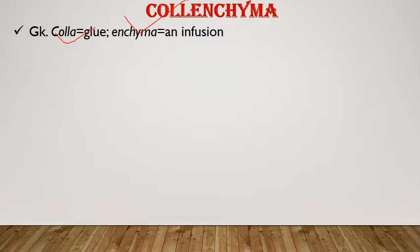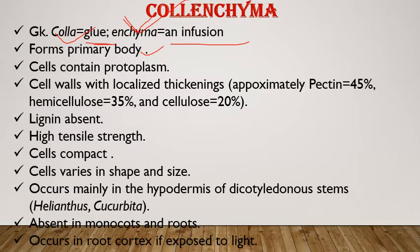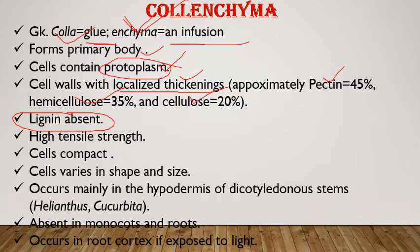Next is colenchyma, derived from the Greek word 'kola' meaning glue and 'enchyma' meaning infusion — so 'glue-like infusion.' It forms the primary plant body. Colenchyma cells contain protoplasm, meaning they are living cells. Their cell walls have localized thickening in particular regions, and the thickening is made up of pectin, hemicellulose, and cellulose — lignin is absent.